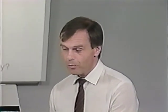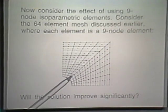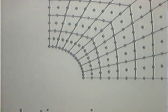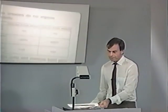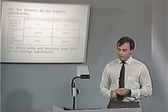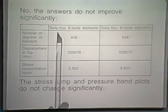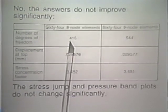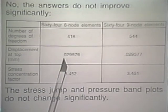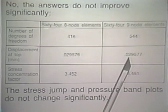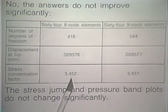Using nine-node elements instead of eight-node elements does not improve the solution very much. With 64 eight-node elements we have 416 degrees of freedom; with nine-node elements we have 544 degrees of freedom. The displacements at the top are unchanged, the stress concentration factor is affected only in the fourth digit, and the stress jump and pressure band plots do not change significantly.